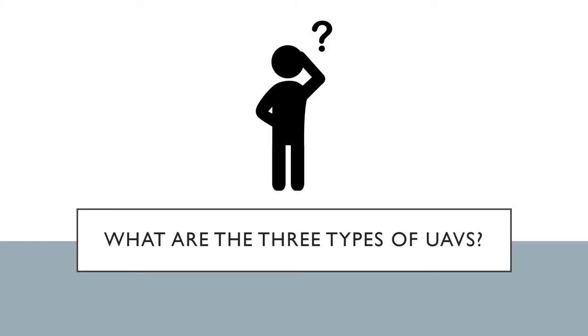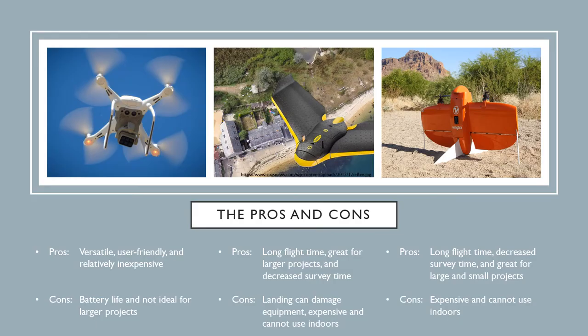Now I want to dive deeper into each type of UAV and talk about the pros and cons. Here on the left we have a multi-copter — this is our DJI Phantom 4 Multi-Spectral, a quadcopter with a different sensor on the bottom that captures multi-spectral imagery. Multi-spectral refers to different bands of light, and we'll cover that later. Some pros of quadcopters: they're very versatile, user-friendly, and relatively inexpensive compared to other drone platforms.